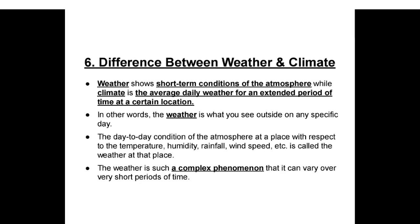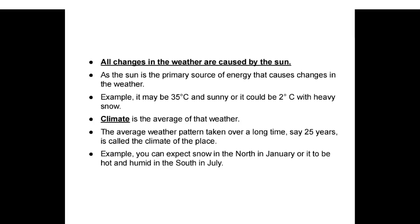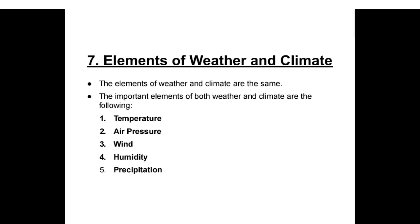Weather and climate: weather shows short-term conditions of the atmosphere, while climate is the average daily weather for an extended period of time at a certain location. The day-to-day condition of the atmosphere with respect to temperature, humidity, rainfall, wind speed, etc., is called weather. Weather is a complex phenomenon that can vary over very short periods of time. All changes in the weather are caused by the sun as the primary source of energy. Climate is the average weather pattern taken over a long time, say 25 years. For example, you can expect snow in the north in January or hot and humid conditions in the south in July.